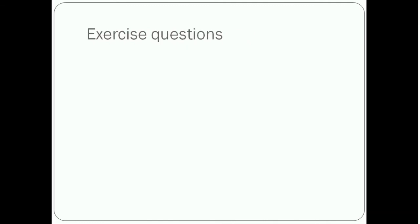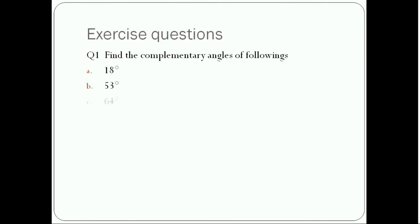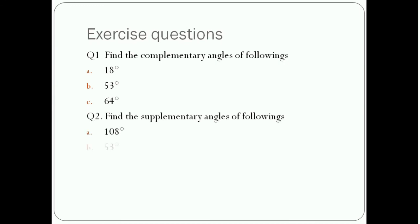Now these are exercise questions. Find the complementary angles of the following. Question number two: find the supplementary angles of the following — part A: 108 degrees, part B: 53 degrees, and part C: 164 degrees. You have to solve these questions.